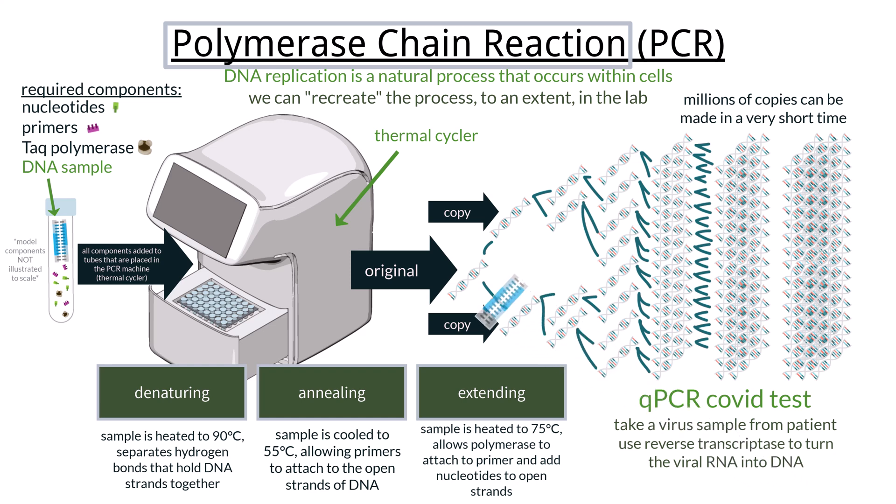The primers used were designed to only connect to DNA that matched with the sequence created from a COVID-19 virus RNA sample. This process also used free-floating nucleotide bases that had fluorescent tags on them. So in this scenario, the DNA would have only been amplified into millions of copies if it was in fact from the correct COVID virus because of the primer, which would have shown a high level of fluorescence with the nucleotides used to replicate it — meaning you were in fact positive for having the virus.